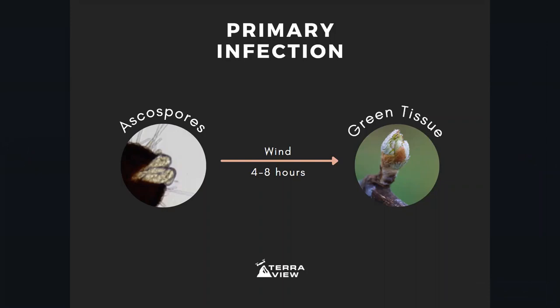One of the reasons powdery mildew is so dangerous is that, unlike downy mildew, it doesn't need any free water or high levels of relative humidity to develop. It only needs a certain temperature. This is really dangerous because with dry conditions — which are increasing with climate change as certain terroirs become drier — as long as you have the right temperature conditions for four to eight hours, you're going to have a full discharge of ascospores from the cleistothecia, and they only need wind to reach and be transmitted to the green tissue of your grapevines.